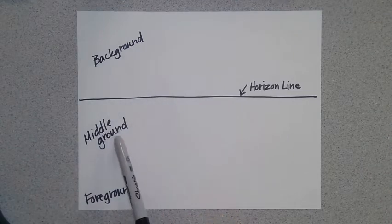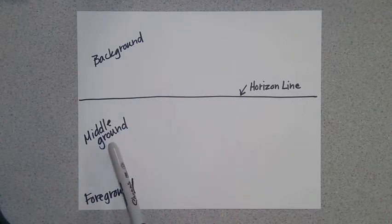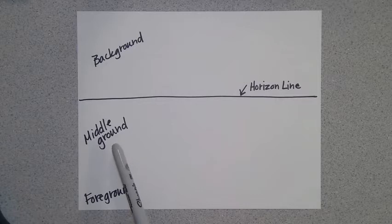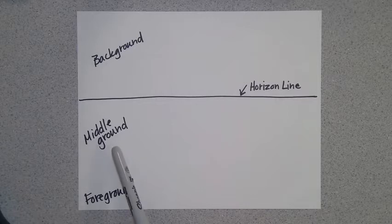The middle ground is the part of the picture that is not the farthest away, but it's also not the closest. It's in between the background and the foreground.